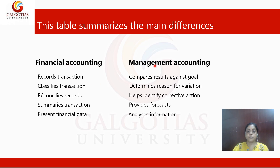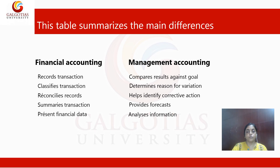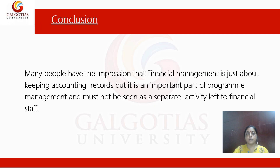The key differences are: financial accounting reconciles records, but management accounting helps identify corrective actions. Financial accounting summarizes transactions, but management accounting provides forecasts. Financial accounting presents financial data, but management accounting analyses that information. This is the basic difference between financial accounting and management accounting.